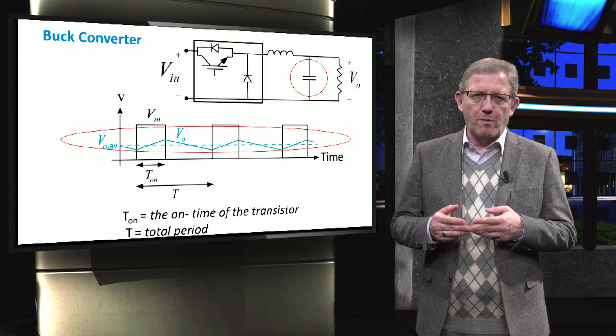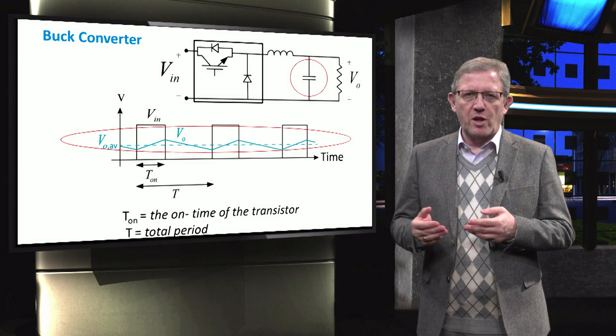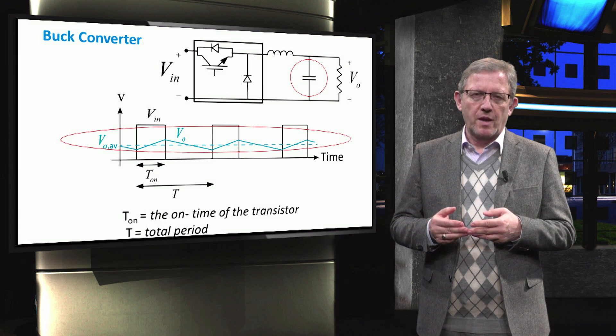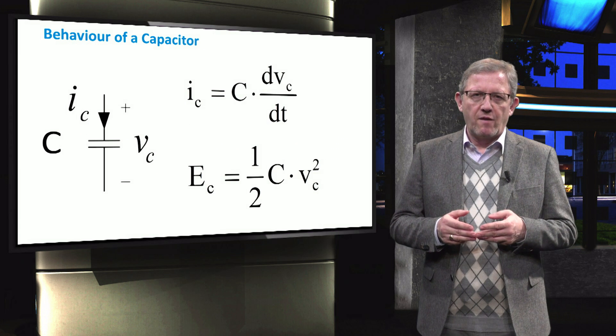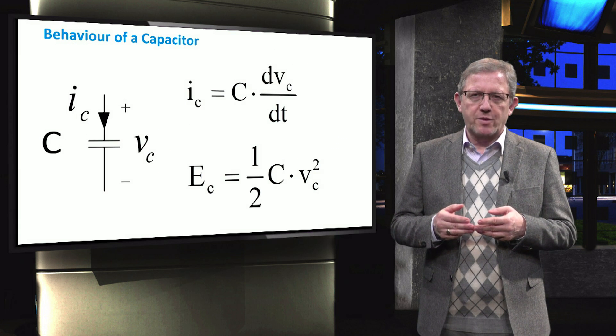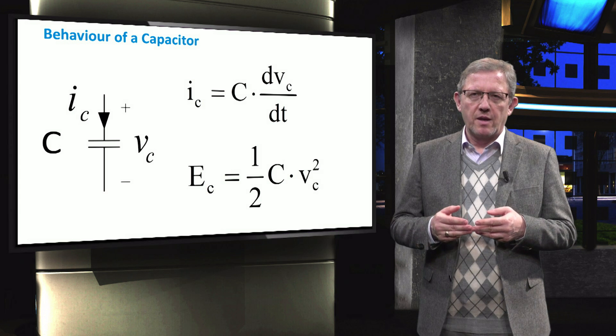As we increase the value of the capacitor, the amount of the voltage ripple is further reduced. In the previous slides, we mentioned that the capacitor helps reduce the output voltage ripple.